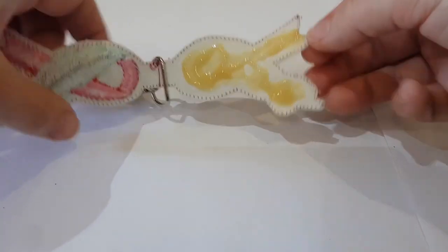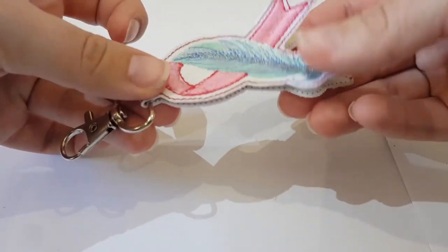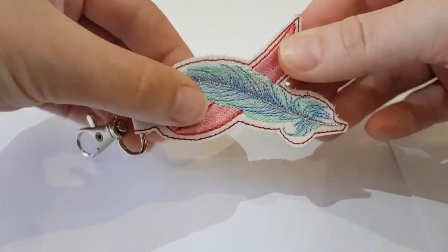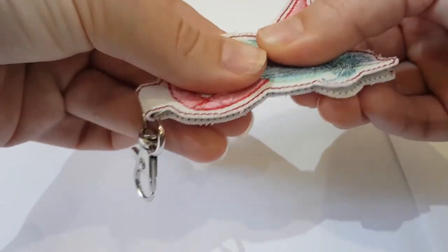After you have adhered the two ends together, apply pressure and hold for a few seconds. Leave the glue to dry according to the manufacturer's specifications.